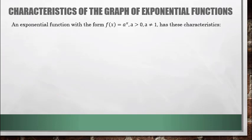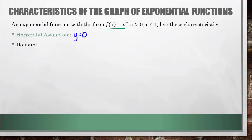Let's talk about the characteristics of these graphs in general. Graphs of f of x equals A to the x, where A is greater than 0 and cannot equal 1, all have the same characteristics. They all have a horizontal asymptote at y equals 0 — y can never equal 0 for these functions; we'll get very close but never reach it. The domain for all of these functions is all real numbers, from negative infinity to infinity. The range is from 0 to infinity, not including 0. There is no x-intercept, since we can never cross the x-axis.